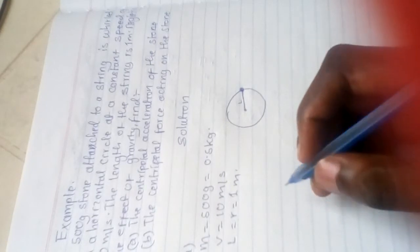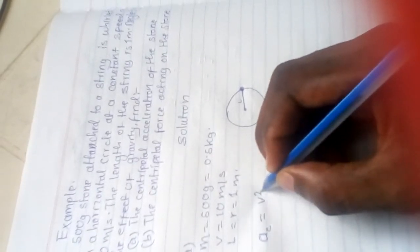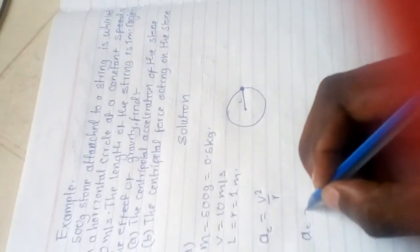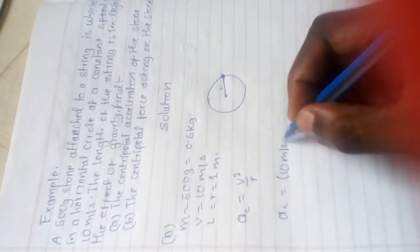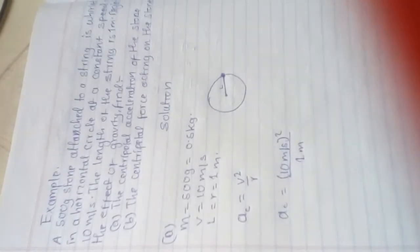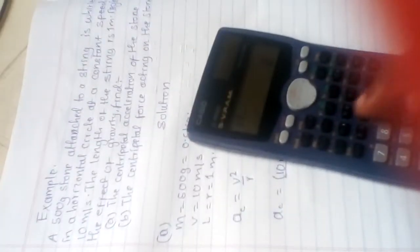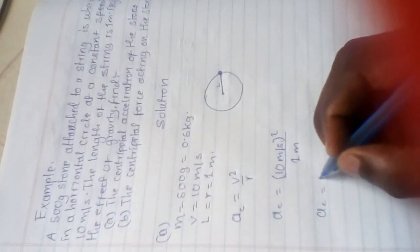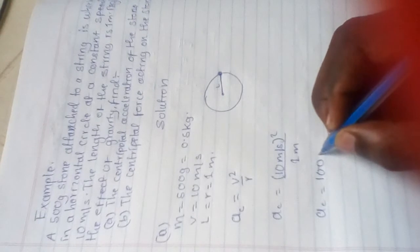We need to find centripetal acceleration. The formula for centripetal acceleration is v squared over r. So ac equals v squared over r. With v being 10 meters per second, squared, divided by radius which is 1 meter. 10 squared equals 100, so centripetal acceleration equals 100.